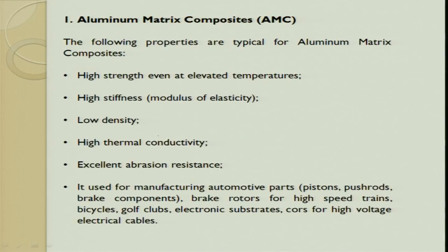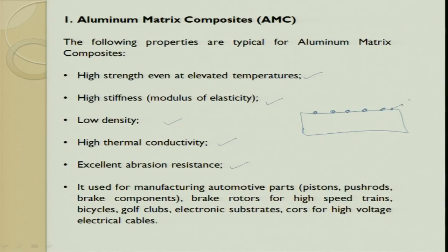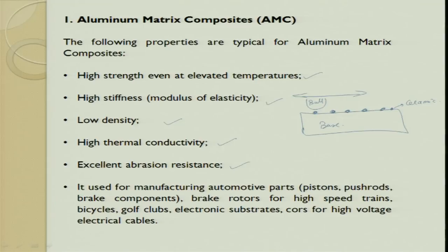Properties of aluminum MMC include high strength at elevated temperatures, high modulus, low density, high thermal conductivity, and excellent abrasive resistance. When ceramic particles are reinforced in the metal matrix, in tribological applications — when a ball or flat surface slides — the ceramic particles prevent contact between the sliding surface and the base material, reducing wear. It is used for automotive parts like pistons, push rods, braking components, and brake rotors for high-speed trains.